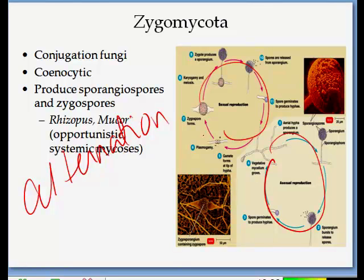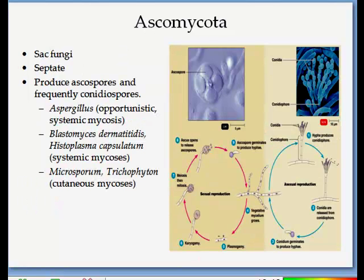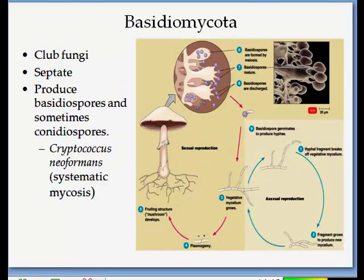Zygomycota are fungi that undergo conjugation. An example is Rhizopus, the mold that causes bread to go bad. The second group are the sac fungi or Ascomycota — these are molds with septate hyphae, and some yeasts are included here. They form ascospores by fusion of two cell nuclei. Basidiomycota are the club fungi, possessing septate hyphae, and they are commonly large enough to see with the naked eye.